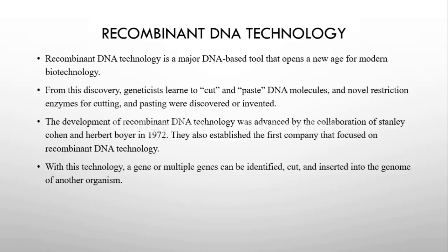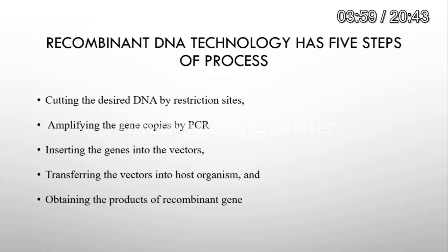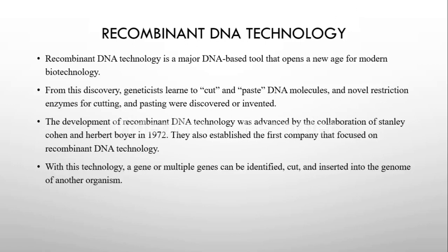There are basically five steps used for DNA technology. The first step is cutting of the DNA at its restriction site. Next, prepare copies of genes using PCR. Next, insert the fragment into vectors, and the vector is inserted into the host organism. Then obtain the product from the recombinant gene. Multiple genes can be identified and inserted into the genome of another organism.